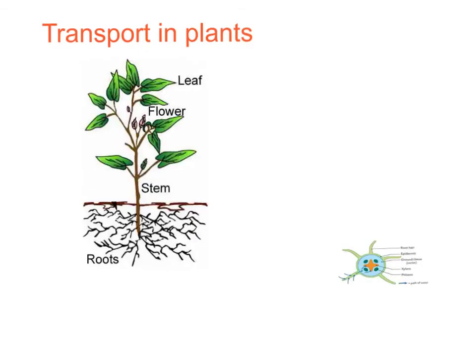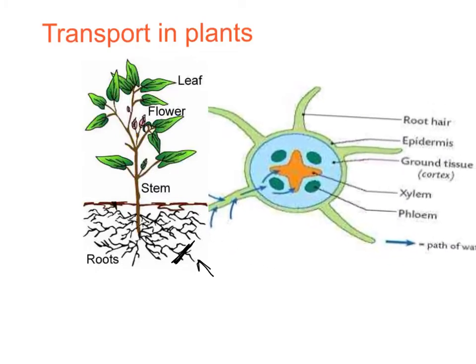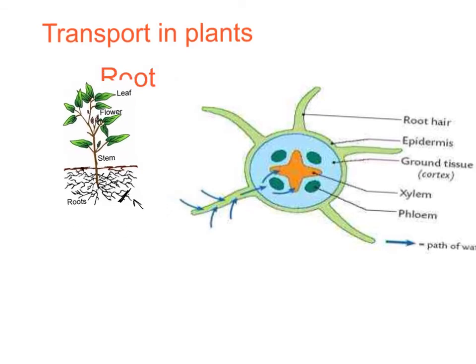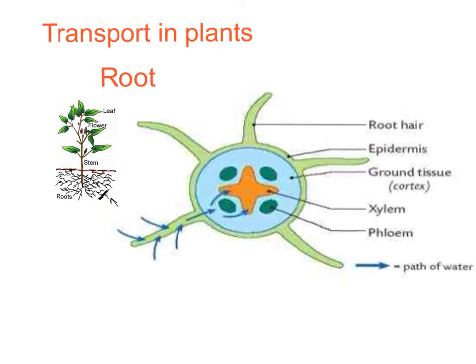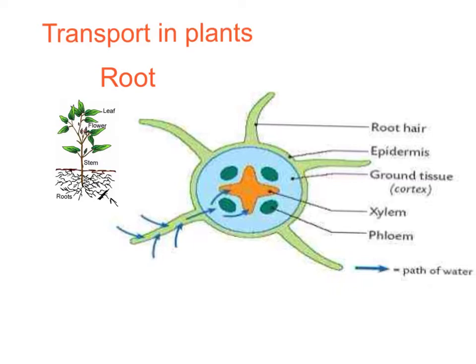Here we've got a picture of a plant. If I was to cut through one of the roots and look at the end view to see what the root looked like, it would be something like this. You don't need to know all of these labels — all I want you to be aware of is that you've got the xylem in the middle there, and these little bundles which are the phloem. We're going to come back to the phloem story a little bit later on.